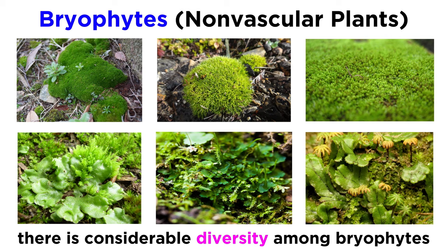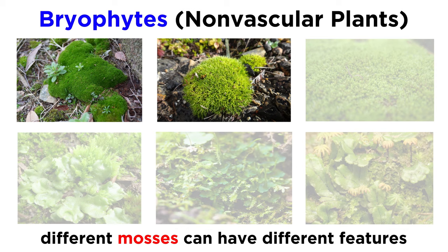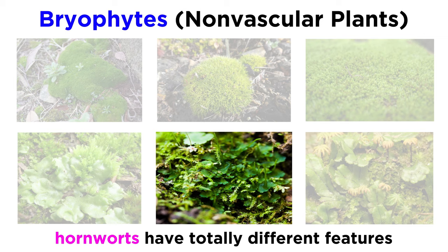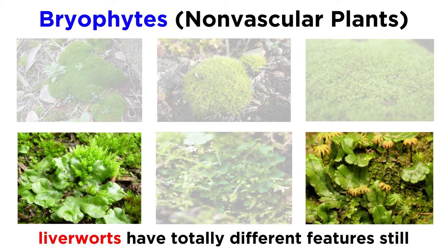Even though bryophytes are considered to be relatively simple plants, their forms show significant diversity between species. For instance, these are two different types of moss. And while this hornwort is somewhat similar in structure to moss, we can also see how different they are. If we also look at a liverwort, we can really begin to understand the variety that exists within the bryophyte group.